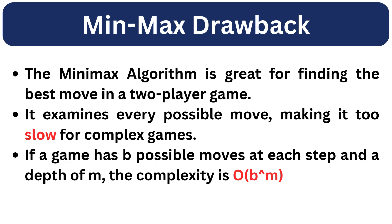Here are some limitations of the min-max algorithm. Min-max is great for finding the best move in a two-player game, but it examines every possible move making it too slow for complex games. If a game has B possible moves at each step and a depth of M, the complexity is order of B^M — too large for deep searches.